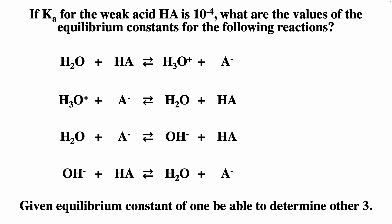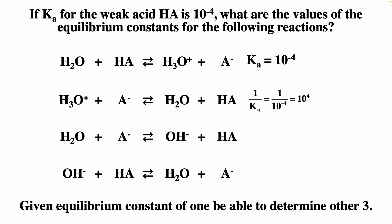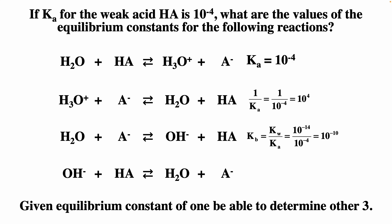If the Ka of a weak acid HA is 10⁻⁴, we can find equilibrium constants for four related reactions. For HA → H⁺ + A⁻, K = Ka = 10⁻⁴. For the reverse, H⁺ + A⁻ → HA, K = 1/Ka = 10⁴. For A⁻ + H₂O → OH⁻ + HA, K = Kb = Kw/Ka = 10⁻¹⁴/10⁻⁴ = 10⁻¹⁰. For the reverse, HA + OH⁻ → A⁻ + H₂O, K = 1/Kb = 10¹⁰. Given any one of these four, you can determine the other three.